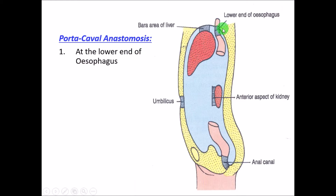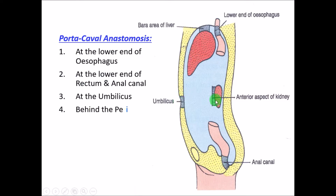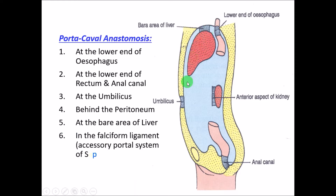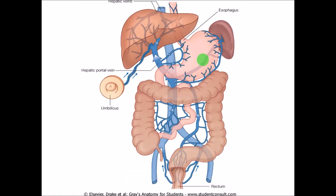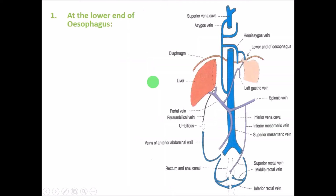The sites of porto-caval anastomosis are: first, at the lower end of the esophagus; second, at the lower end of the rectum and anal canal; third, around the umbilicus; fourth, behind the peritoneum; fifth, at the bare area of the liver; sixth, near the falciform ligament; and seventh, near the fissure of the ligamentum venosum. These are seven sites of porto-caval anastomosis.